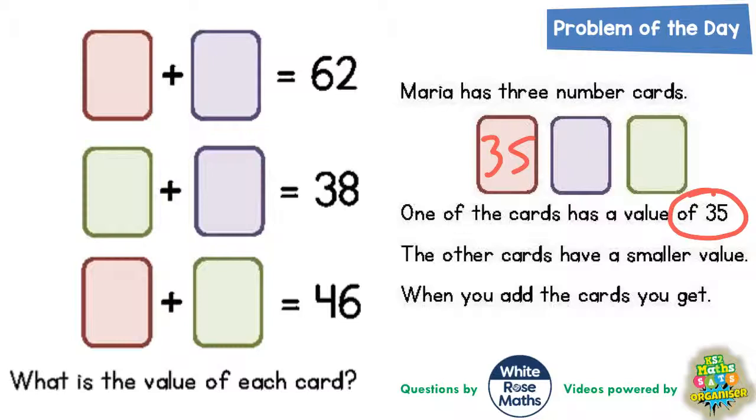If red is 35, then this one here must be 35 and this one down here must be 35, and then we'll see how that works out.